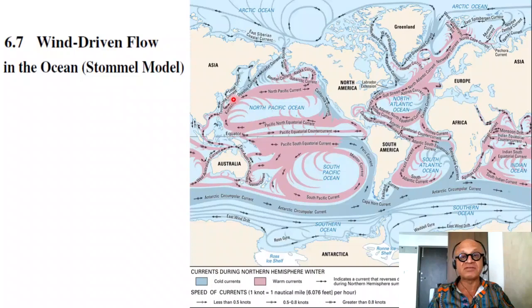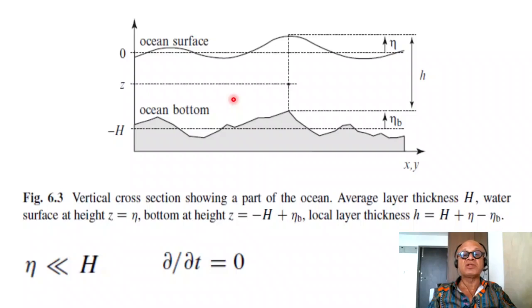In fact, kuroshio, in Japanese, means black current because it's not very productive. Japanese love their fish, and anything that doesn't have fish, they wouldn't like it. So, Henry Stommel was the first one to sit down and write a simple model and show why there is western boundary intensification.